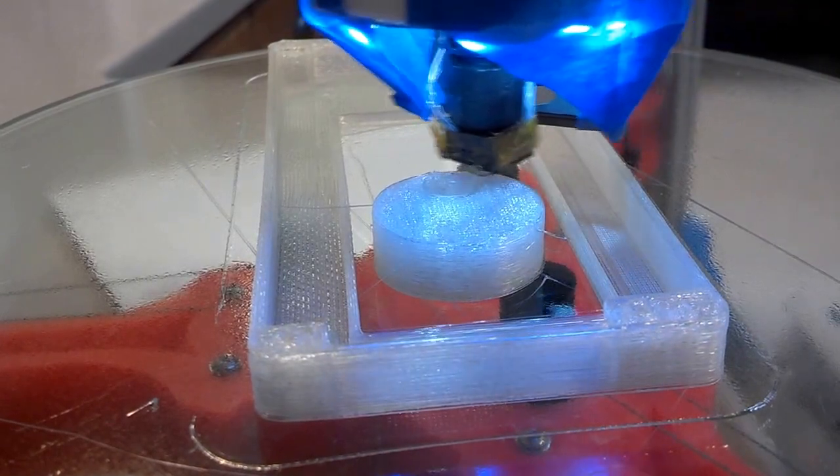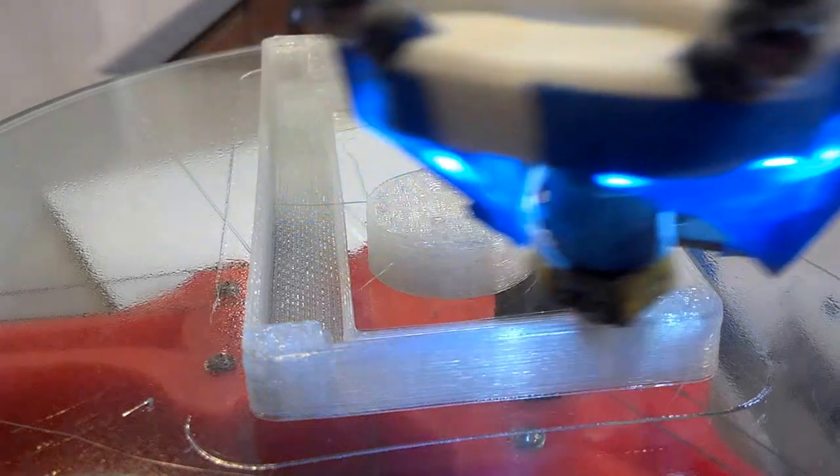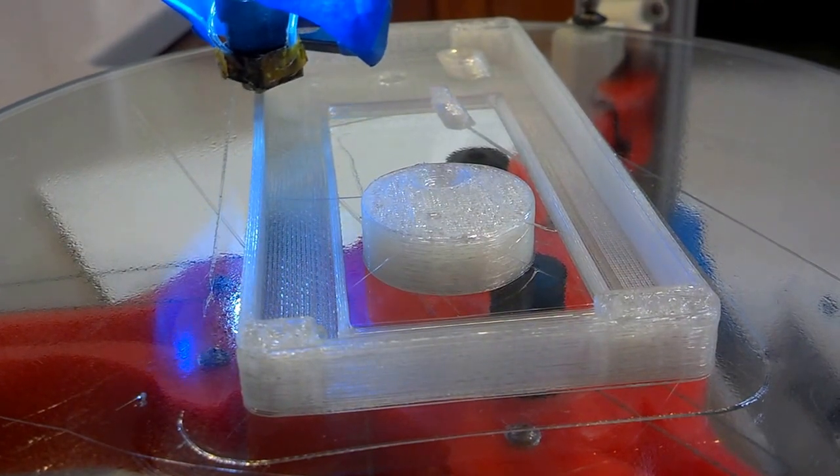This is outer perimeters at 100, infill at 180, and travels at 350 millimeters per second.